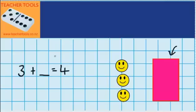So, I'm trying to work out how many counters are there under that rectangle. So, imagine those three counters and think to yourself, how many more counters would I need to add to have four counters?